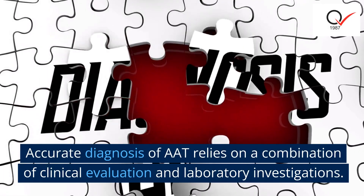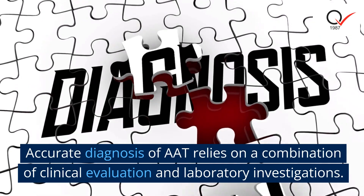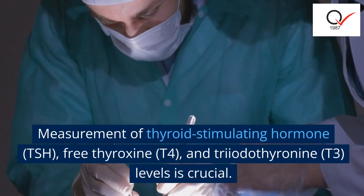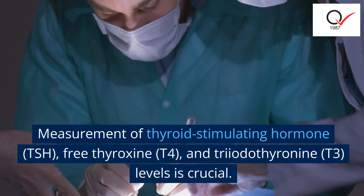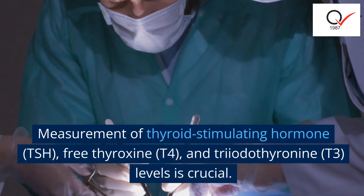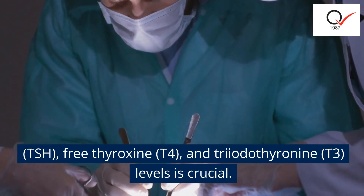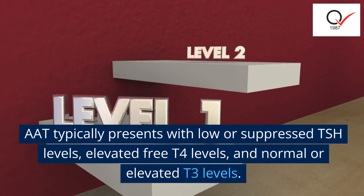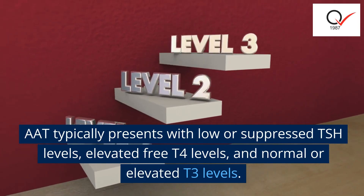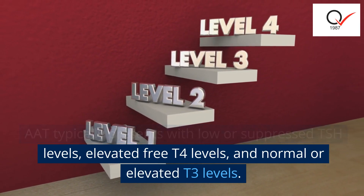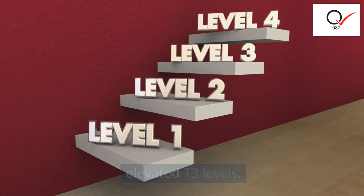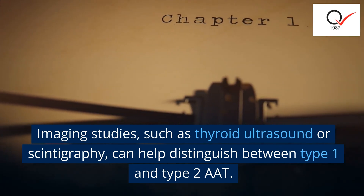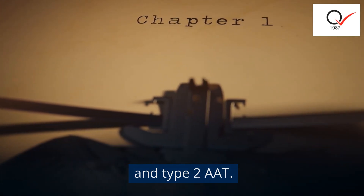Accurate diagnosis of AAT relies on a combination of clinical evaluation and laboratory investigations. Measurement of thyroid-stimulating hormone (TSH), free thyroxine (T4), and triiodothyronine (T3) levels is crucial. AAT typically presents with low or suppressed TSH levels, elevated free T4 levels, and normal or elevated T3 levels. Imaging studies, such as thyroid ultrasound or scintigraphy, can help distinguish between type 1 and type 2 AAT.